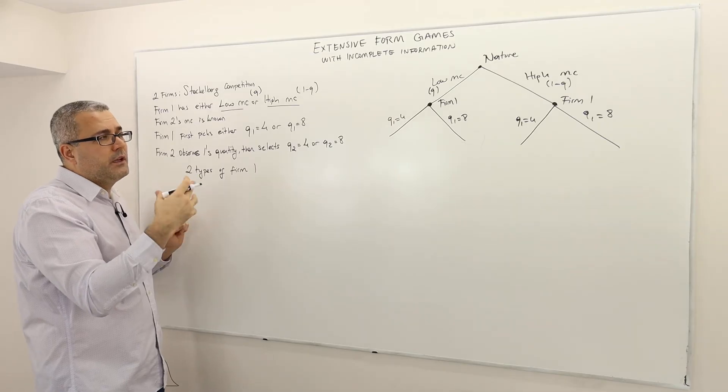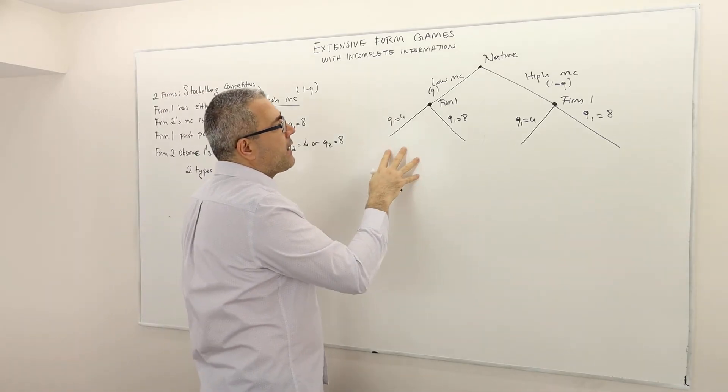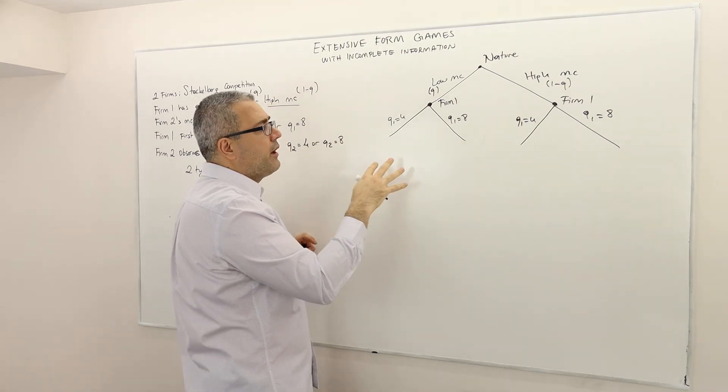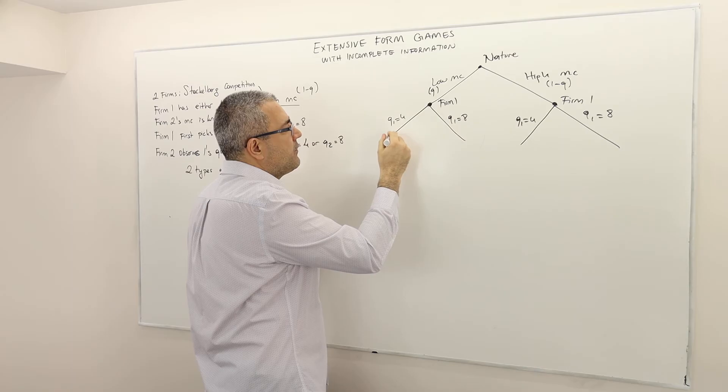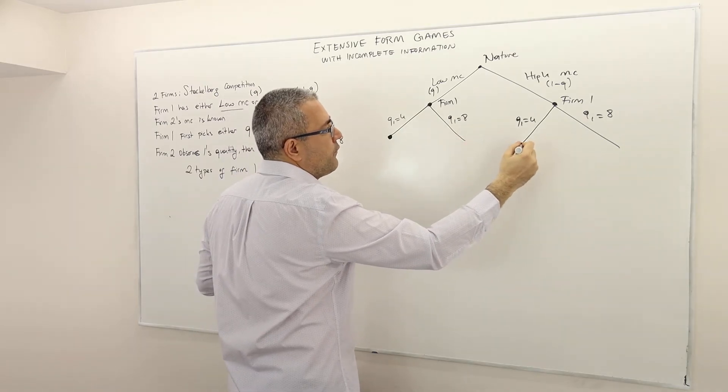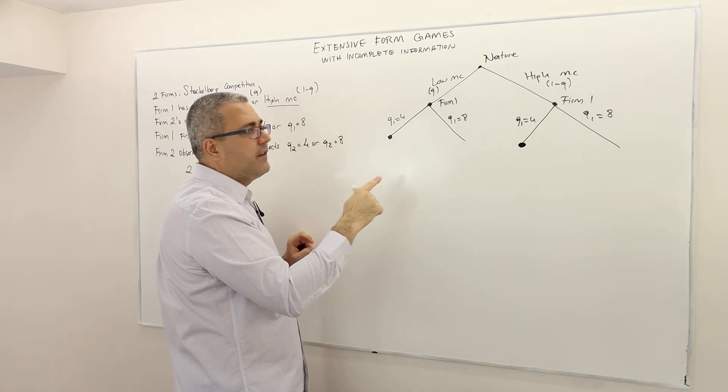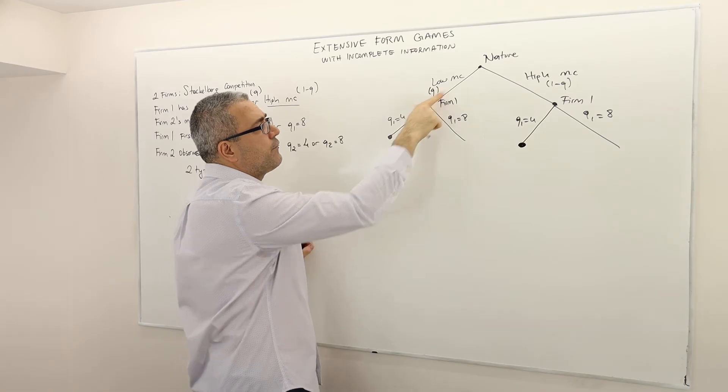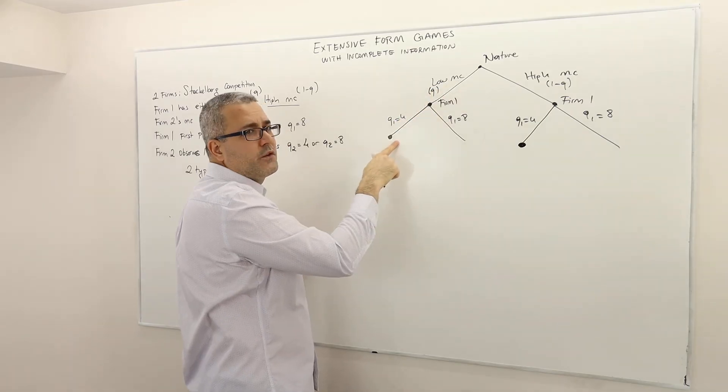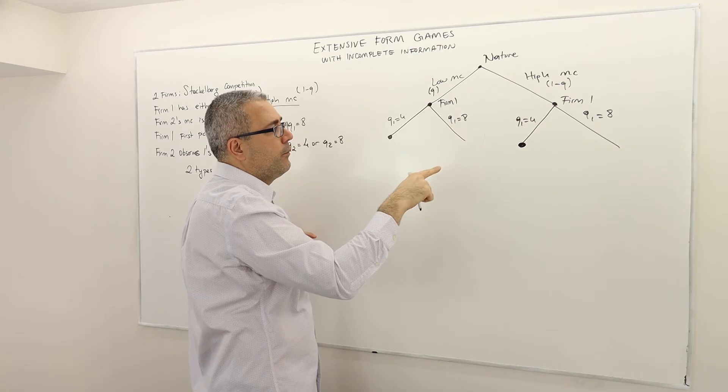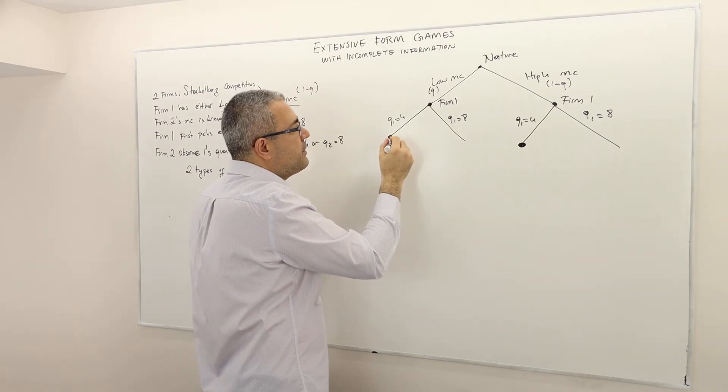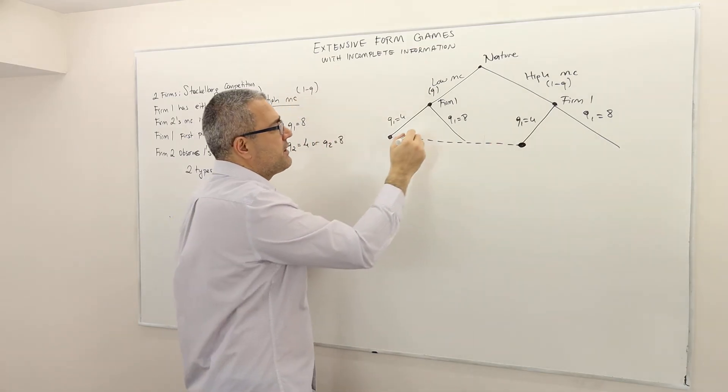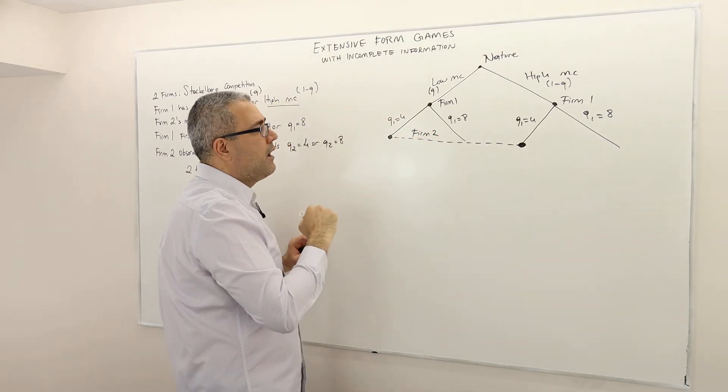So how am I going to incorporate this on the game tree? Once again firm 2 can observe the quantity choice of firm 1. However firm 2 cannot observe the true type of firm 1. So how am I going to incorporate this? Well so if firm 2 can distinguish or observe the quantity of firm 1, that means whenever firm 1 chooses quantity equals 4, firm 2 is going to see that. But what firm 2 cannot distinguish is whether this choice is coming from the low cost firm or from high cost firm. So therefore these two decision nodes must be in the same information set for firm 2.